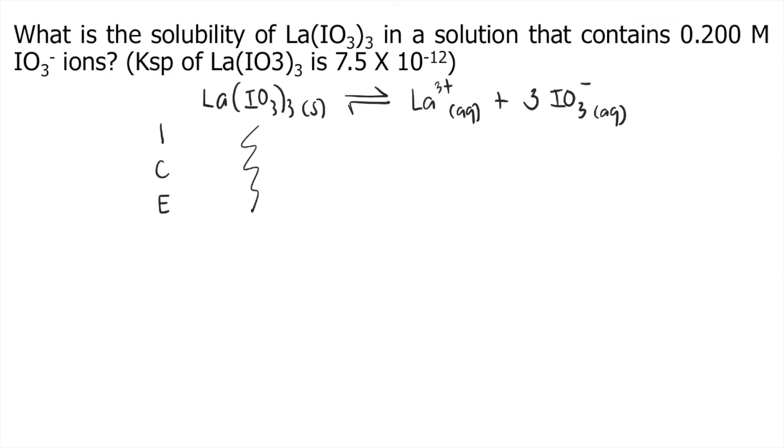Let's focus on the products. Initially, there's none of the La³⁺, so that's 0. For IO3⁻, according to the problem, we have 0.200 molar of IO3⁻, so you put 0.200.